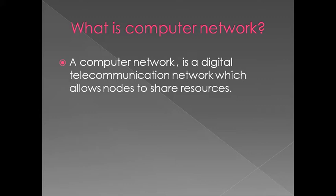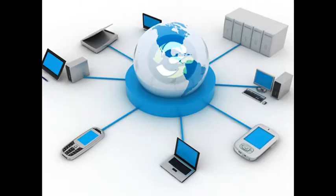There are devices like hubs and switches, and different kinds of networks can be connected to each other using a router. In general, networks that use cables to connect can operate at higher speeds than those using wireless technology. In this image we can see there are different kinds of devices which are connected.